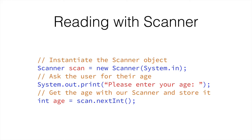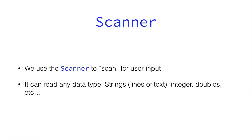Finally we get the age with our scanner and store it in a variable. So we do int age — we create a new variable of type integer, and in it we put the next integer that the scanner can get. We assume that the user has entered a number in the console, and then we get this number and put it into our variable called age. The scanner can read any data type — strings, integers, doubles, floats, characters. Well actually I'm not sure it can read booleans, but it can read anything else.